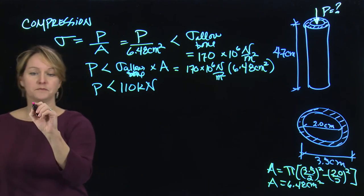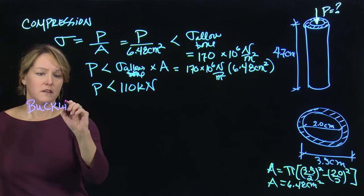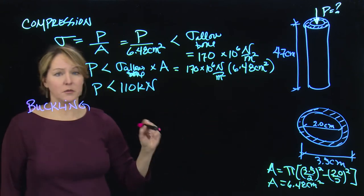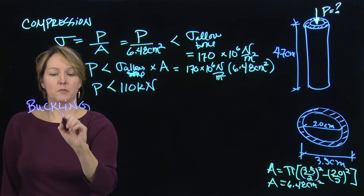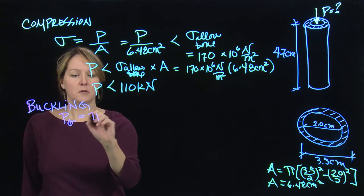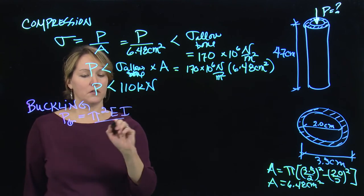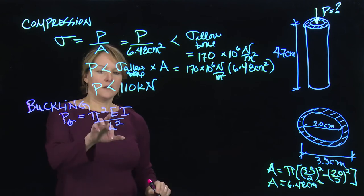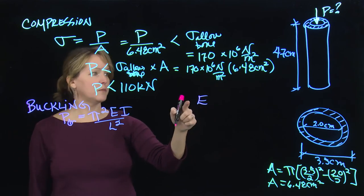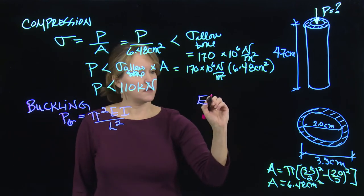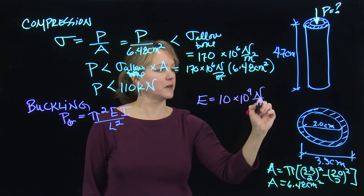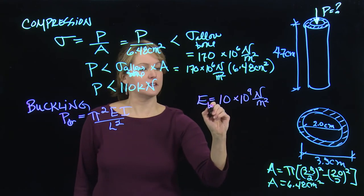The other thing we need to look at is buckling. So we need to make sure that the femur doesn't buckle. That would be another failure mode. Again, that is applying a load such that it causes it to move laterally. And that buckling load is going to be a little more straightforward. I'm just going to calculate this buckling load. It will be pi squared EI over L squared. E is the modulus of elasticity. It's a material property. So it's another value I can look up based on the material property of bone. And I've looked that up. And I'm going to use 10 times 10 to the 9th newtons per meter squared. That's a typical modulus of elasticity for bone.